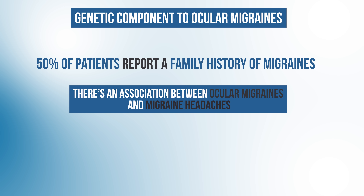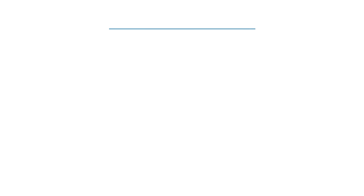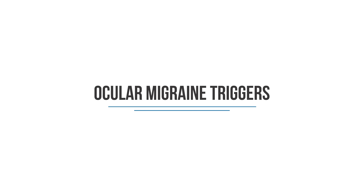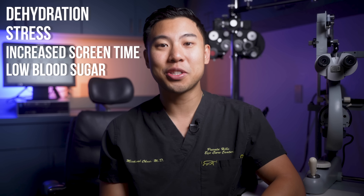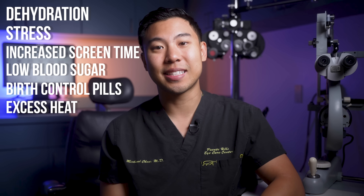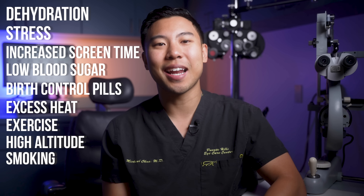There also seems to be an association between ocular migraines and migraine headaches, as 29% of patients with ocular migraines report a history of migraine headache. Some common triggers reported in the medical literature include dehydration, stress, increased screen time, low blood sugar, birth control pills, excess heat, exercise, high altitude, smoking, and high blood pressure.